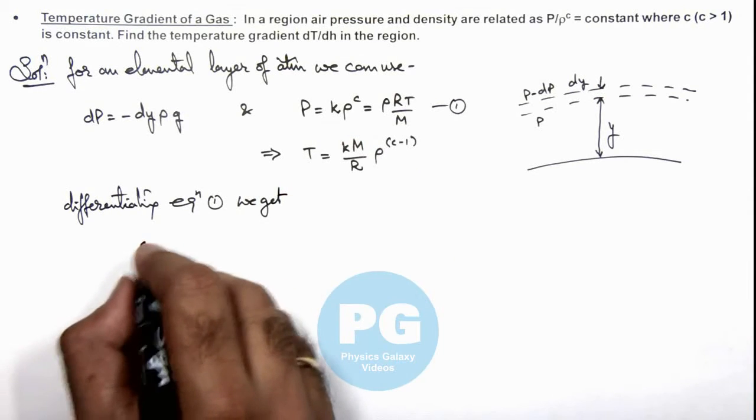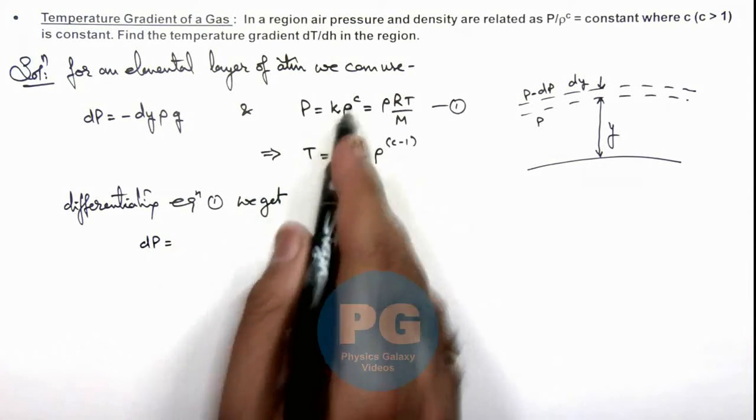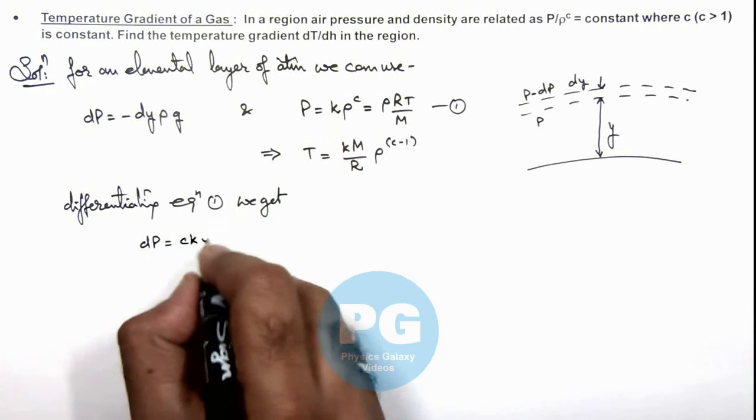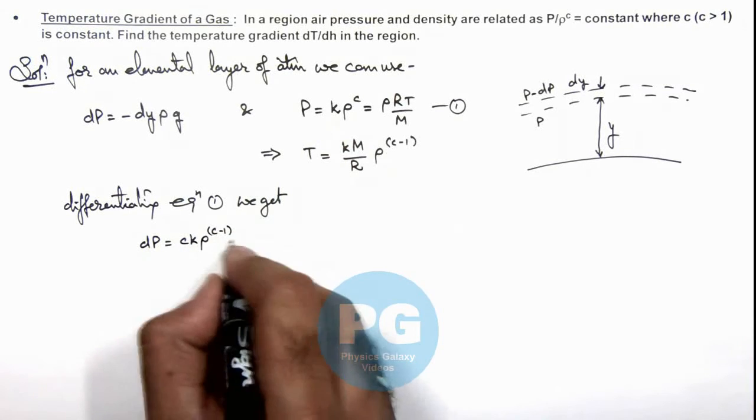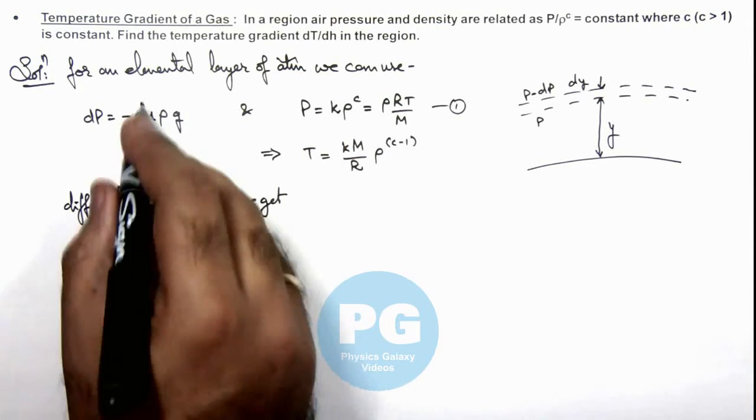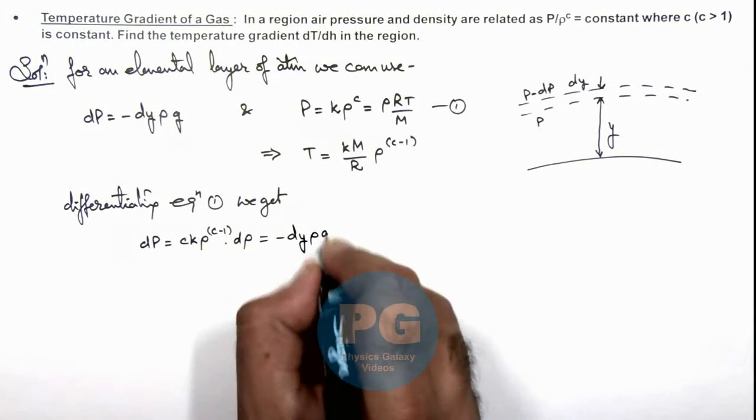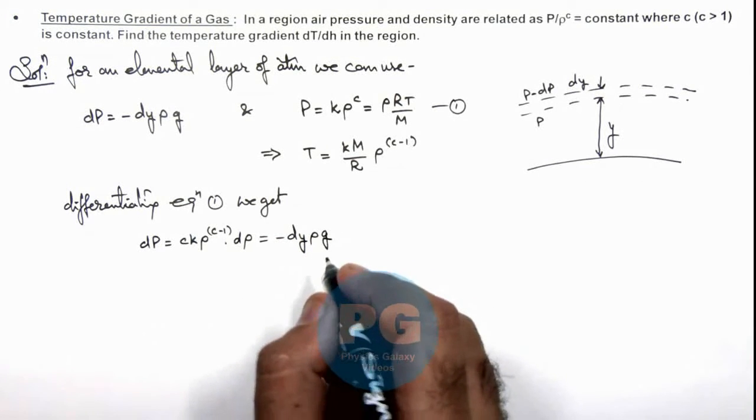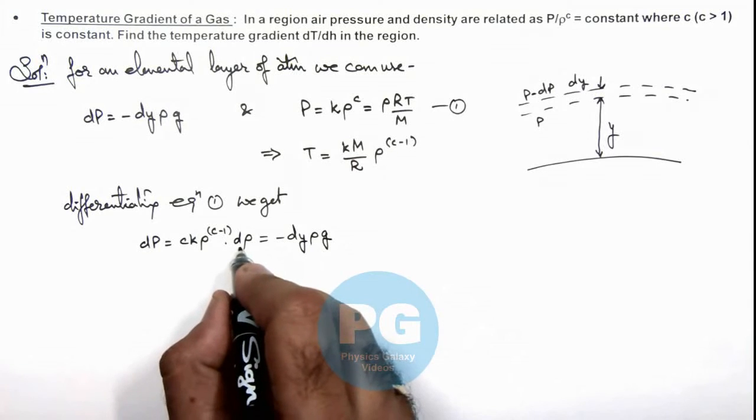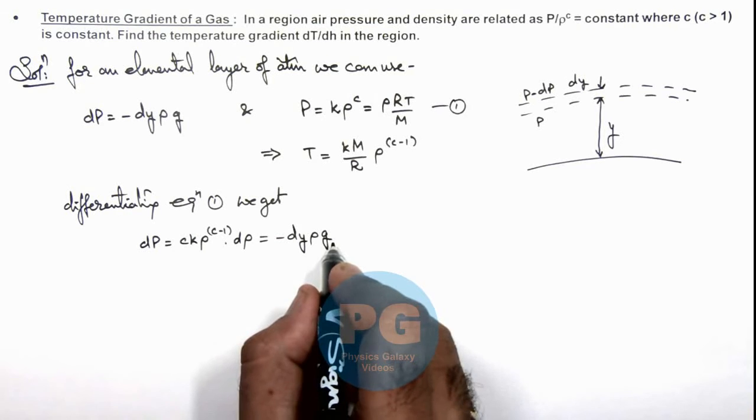We get this gives us d p is equal to, if you differentiate this, this gives you c k ro to power c minus 1 multiplied by d ro. And the value of d p we already calculated as minus d y. So in this situation we get the value of d ro in terms of d y as well as ro.